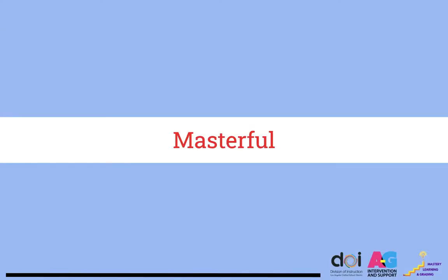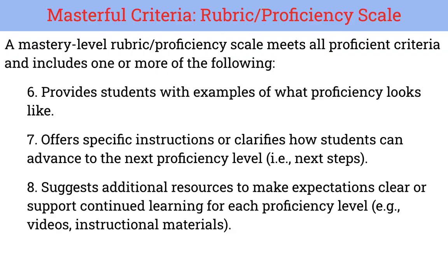Now let's look at the mastery criteria. A mastery level rubric is going to meet all of the proficient criteria we just reviewed, and will include at least one of the following: provide students with examples of what proficiency looks like; offer specific instructions or clarify how students can advance to the next proficiency level; or suggest additional resources to make expectations clear or to support the student's continued learning.